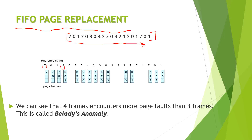When two comes, it sees there is no room for two, so a replacement algorithm must be applied. It will check which frame came first in the sequence. As you can see, seven came first in the sequence, so it will replace only that page and store itself in the location of seven. Now the sequence in the frames will be 2, 0, 1.